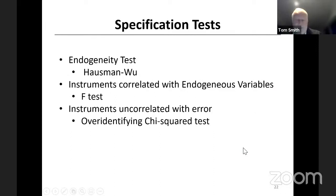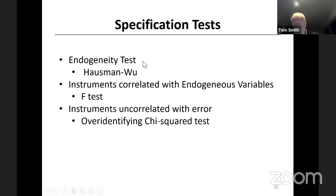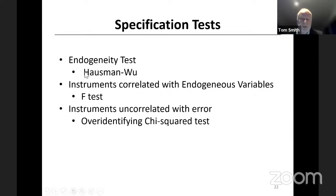There are three specification tests you need to do when dealing with endogeneity. The first is: do you really have an endogeneity problem at all? It may well be that theoretically there could be endogeneity — that is, you don't know what causes what — but in practice, when you actually do the test, it isn't really a concern. The test to see whether you have endogeneity is called the Hausman-Wu test.